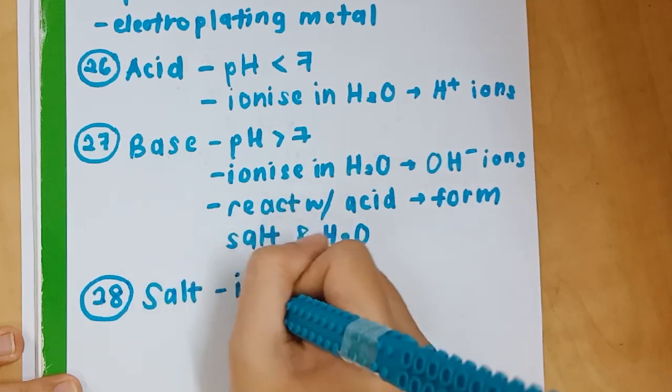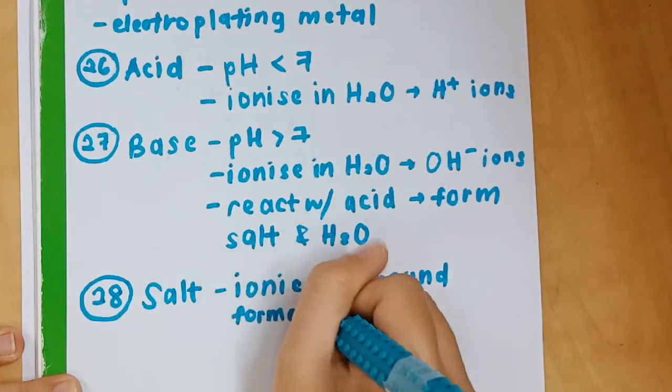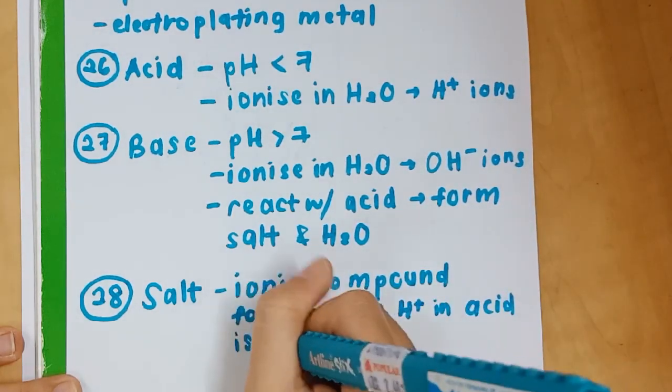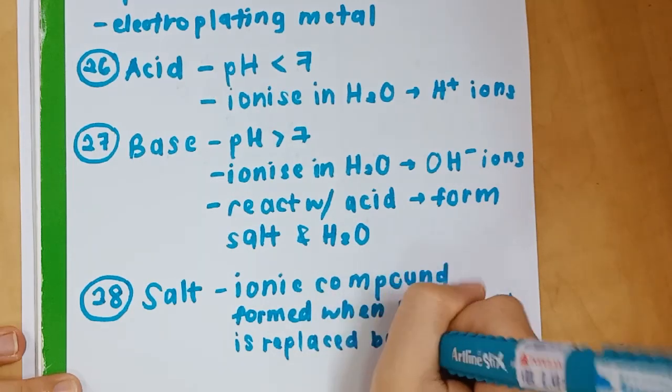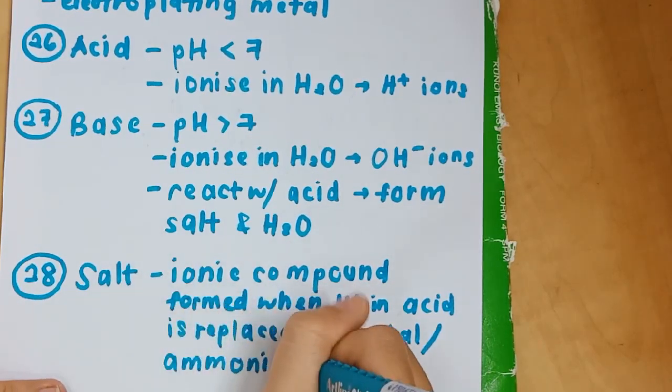Finally, number 28: we have salt. Salt is another chapter in itself, but you need to know the definition of salt. Ionic compounds formed when H⁺ in acid is replaced by metal or ammonium ion, which is NH₄⁺.